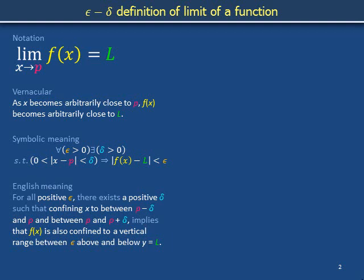Unpacked and converted into standard English, these symbols together mean: for all positive epsilon, there exists a positive delta such that confining x to between p minus delta and p, and between p and p plus delta, implies that f of x is also confined to between epsilon above and below y equals l.